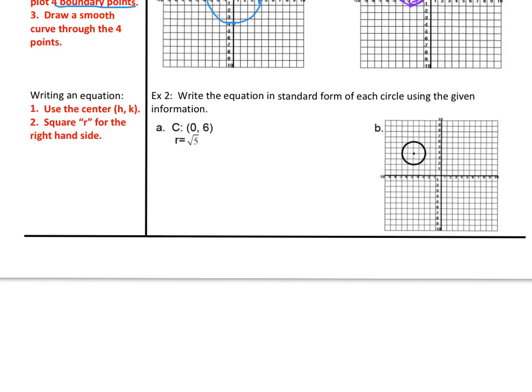Over on the right, it says write an equation in standard form of each circle using the given information. In example a, it tells you the center and the length of the radius. Since the center is translated, we know we're going to use that (h,k) rule. The template is (x-h)² + (y-k)² = r². If we plug in what we know, h is 0, we would have (x-0)² and we'll simplify that. Since k is positive 6 in the equation, it stays minus 6. The radius is √5, but we're supposed to square that value.